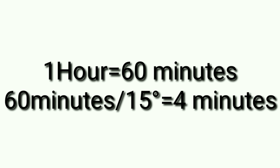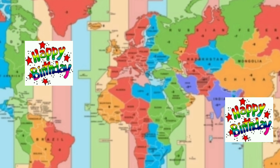Now think — if the earth rotates 15 degrees in 1 hour, then how much time does it take for 1 degree? 1 hour equals 60 minutes. 60 minutes divided by 15 degrees gives us 4 minutes. So the earth takes 4 minutes to move from one longitude to another.